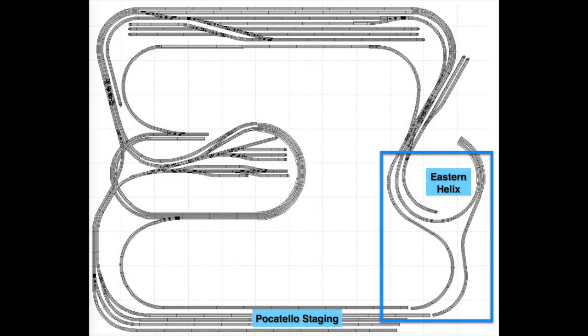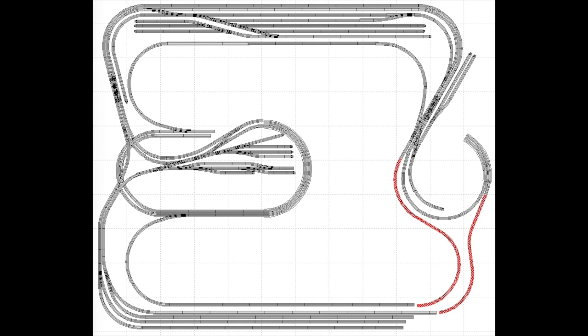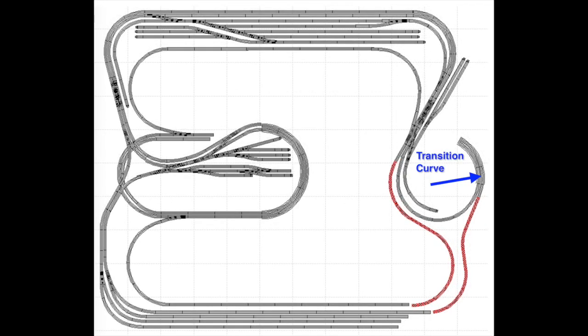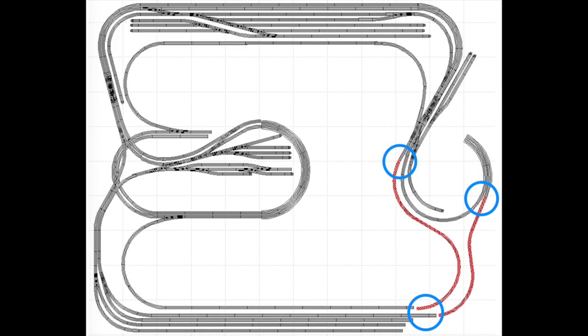Let's begin by taking a look at the track plan. I'm starting to work on bridging the gap between the Eastern Helix and Pocatello staging, shown here in the blue box. Specifically, I've modified the track plan in this corner. The current track configuration is shown here in red. I had to modify the previous version of the track plan just slightly because in the previous version, I forgot to include a section of transition track here. The transition track must go between the super elevated curves and the regular track. It wasn't easy to get the tracks to line up at both ends of this track plan change where you see the blue circles.